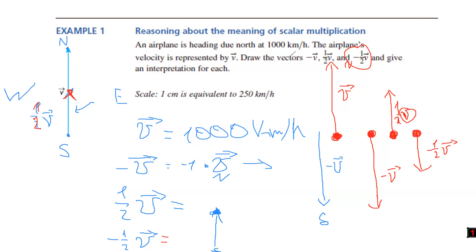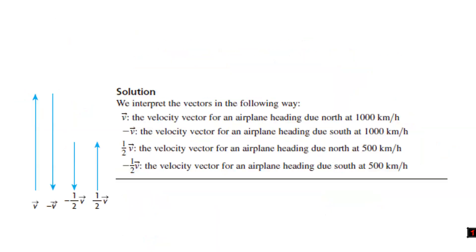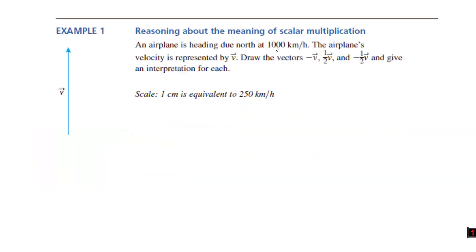Here's the solution — we were right. The initial speed was 1000 km/h. When we multiply by negative one-half, what is the speed? The magnitude would be 500 — but remember, magnitude is always positive. Direction becomes reversed. You can't write negative 500 as a magnitude; you can say it's 500 km/h due south.